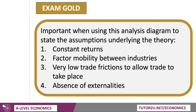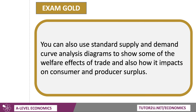It's important when using this diagram to state the assumptions underlying the theory. We're assuming constant returns, which may not hold. We're assuming that factors of production are mobile between industries — between steel and wine. We're assuming there aren't any significant barriers to trade or trade frictions. And we're assuming the absence of externalities of production and consumption that could impact on social welfare.